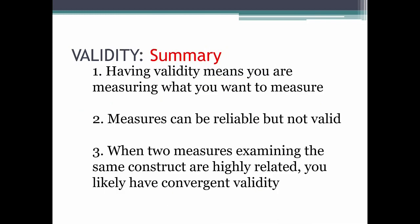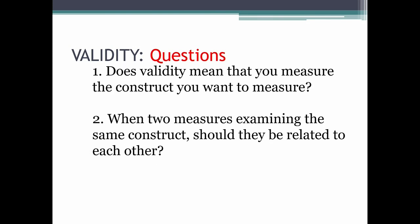To summarize, having validity means you're measuring what you want to measure. Measures can be reliable, but not valid. When two measures examining the same construct are highly related, you likely have convergent validity. A couple questions to take away that you might use for organizing your notes might be, does validity mean that you measure the construct you want to measure? And when two measures examining the same construct, should they be related to each other?